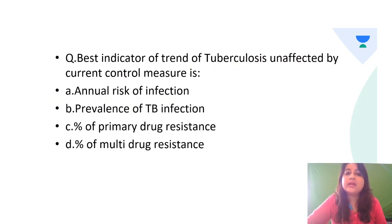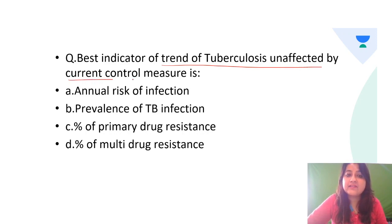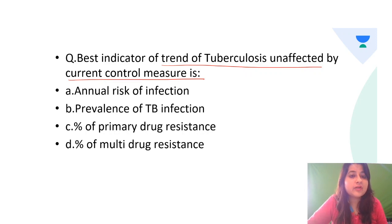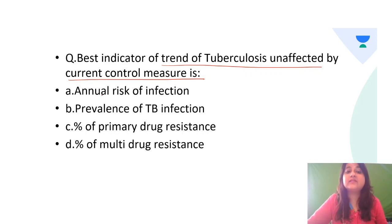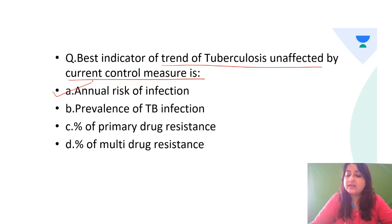One more MCQ: the best indicator of trend of tuberculosis unaffected by current control measures — is it annual risk of infection, prevalence of TB infection, primary percentage of primary drug resistance, or percentage of multi-drug resistance? The correct answer is annual risk of infection. Now let's understand all of these indicators and revisit the MCQs.